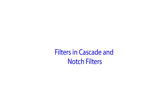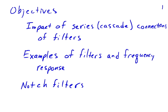It's very common to connect filters in series or in cascade. One of the things you can do with such a combination is implement a very simple notch filter. A notch filter removes a particular frequency from the input signal. The objectives of this video are to look at series and cascade connections of filters, what that means for impulse response and frequency response, consider some examples of filters in cascade, and learn how to design a very simple notch filter using this cascade principle.